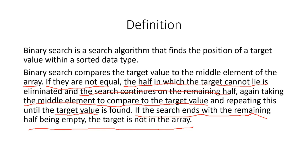Binary search works on a sorted data type — this is very important. It recursively or iteratively compares the middle element. If the target is bigger than the middle element, it goes to the right side. If the target is less than the middle, it goes to the left side.